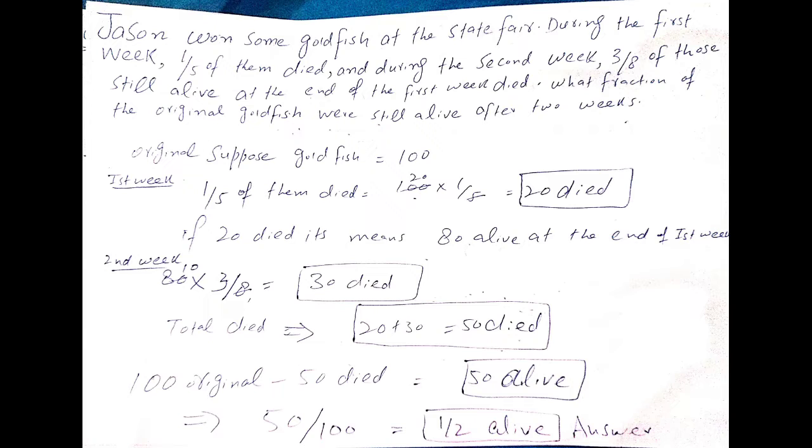Jason found some goldfish at the state fair during the first week. 1/5 of them died and during the second week 3/8 of those still alive at the end of the first week died. Find the fraction of the original goldfish still alive after 2 weeks.